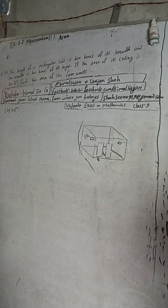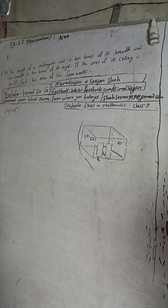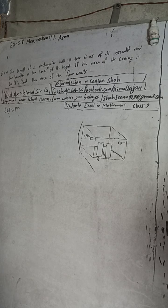Hi class 9 and 10 students, welcome back to Bimbal Surgery YouTube channel. This is question number 6b, exercise 5.3, mensuration, first part: area. The question is: the length of a rectangular hall is two times its breadth, and the breadth is two times its height. If the area of its ceiling is 200 square feet, find the area of the four walls.